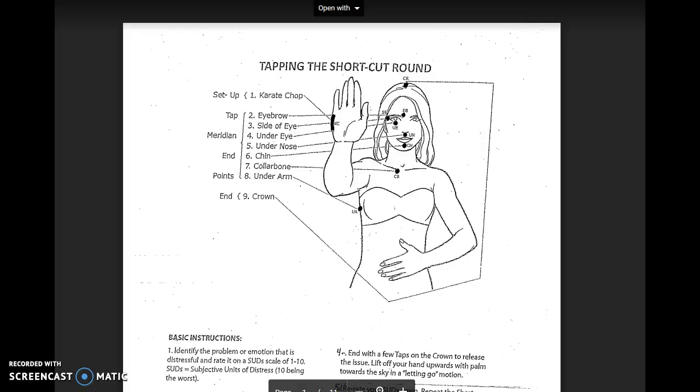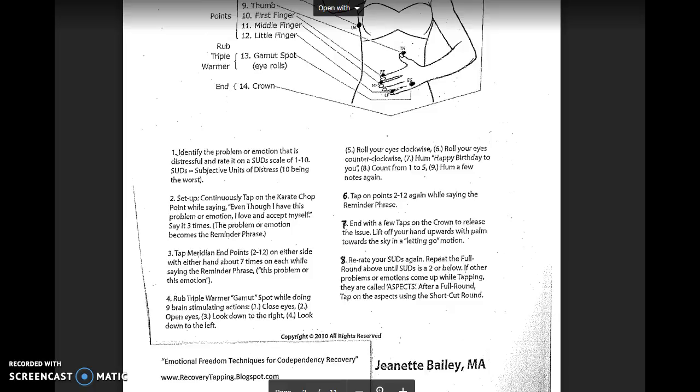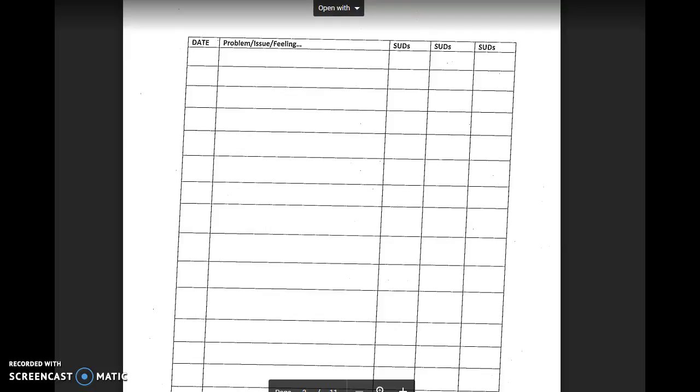So of course we have the tapping shortcut and the full round with all the directions and tapping points. This sheet came out crooked, but I'm just doing the best I can right now.